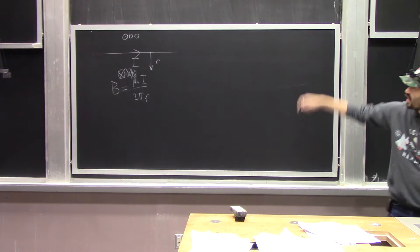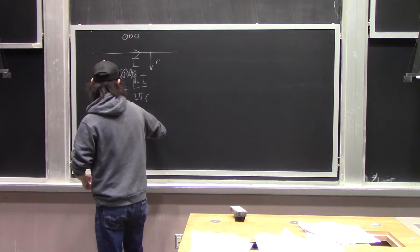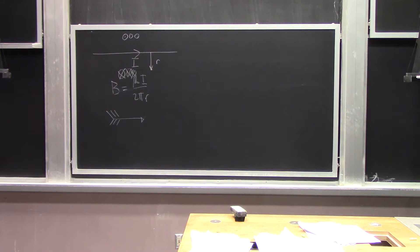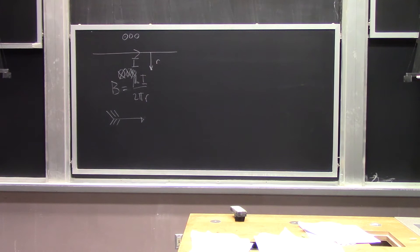Remembering our notation: a circle with a dot represents an arrow coming toward you — you see the tip of the arrow — and a circle with a cross represents the arrow moving away from us. That was what we covered last time.